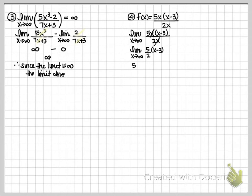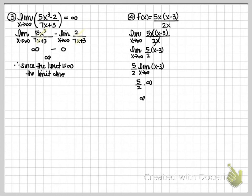If you have a coefficient in there, you can pull it out and put it in front. So I still have this 5 halves, and it's going to be multiplied by whatever I find inside. If I plug in infinity, I have the largest number I could possibly imagine, then subtract 3 from it — still a pretty gigantic number, so we refer to it as infinity. And 5 halves times infinity is still infinity. So this is going to be infinity, and therefore the limit does not exist.